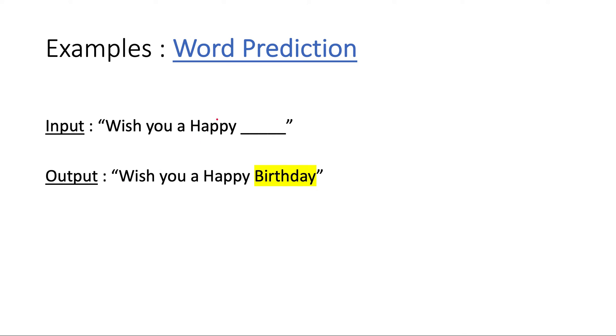Then we can use it in word prediction. You have seen this application in Gmail - you are typing something and it tries to predict future words. Or in your smartphone, you are typing some messages and it automatically suggests future words based on what you have typed in the past. For example, 'Wish you a Happy,' so it can predict 'Birthday' or maybe some other words.